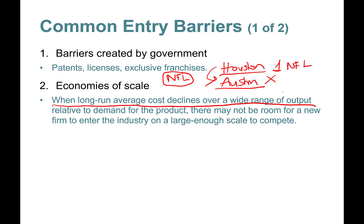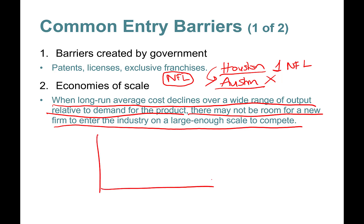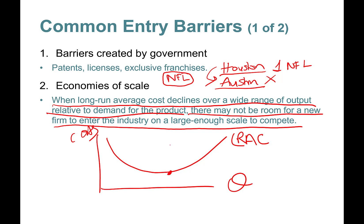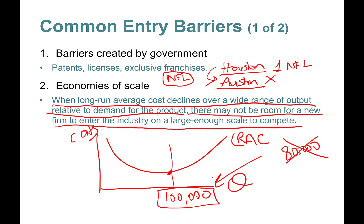When long-run average cost declines over a wide range of outputs relative to demand, there may not be room for a new firm to enter at a large enough scale to compete. The long-run average cost curve slopes down, so to lower your costs you need to be really big — for instance, you need to fill a stadium with 100,000 people, and you can't do that in a city of 80,000.